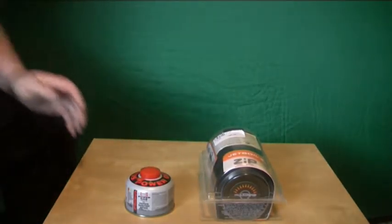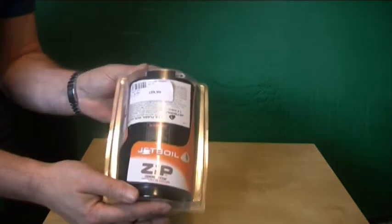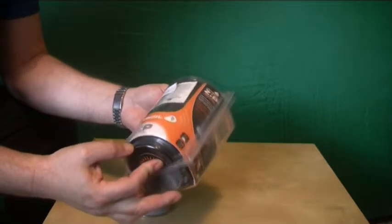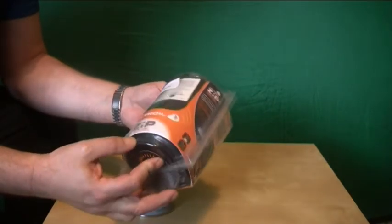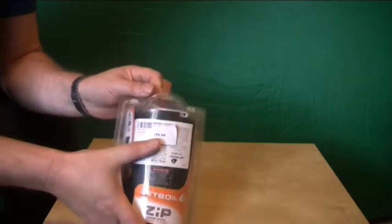Hello, and today we're looking at the Jetboil Zip cooking system. I bought this one from Decathlon for £59.99, quite cheap. They retail for around £80.